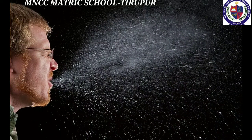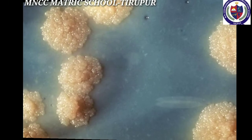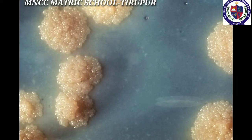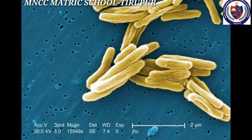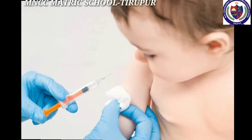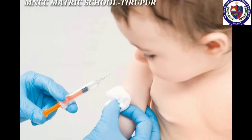Diseases caused by bacteria. First one is tuberculosis. TB is caused by Mycobacterium tuberculae and spreads from one person to another through air, by spitting, or prolonged contact with or sharing materials of the patient. The symptoms are fever, weight loss, chronic cough, bloody spitting, and difficulty in breathing.